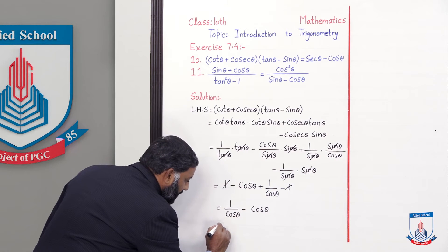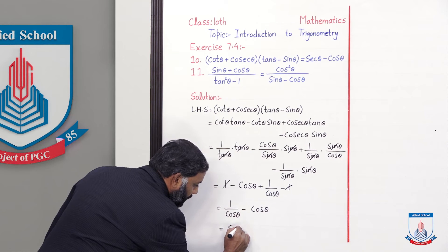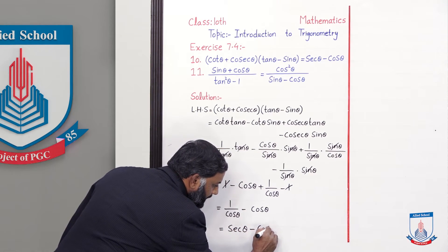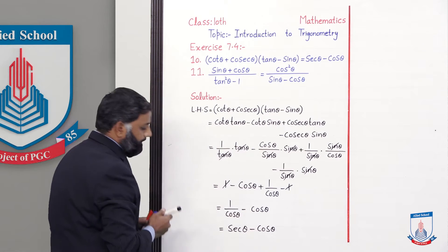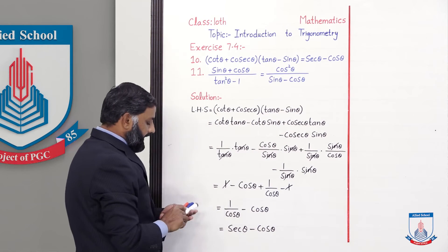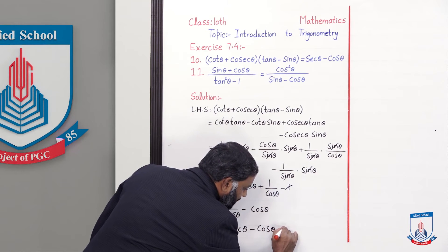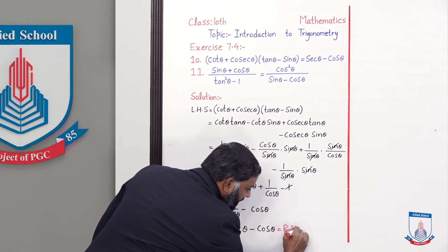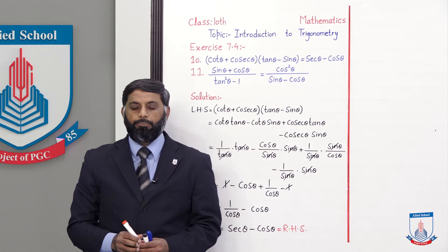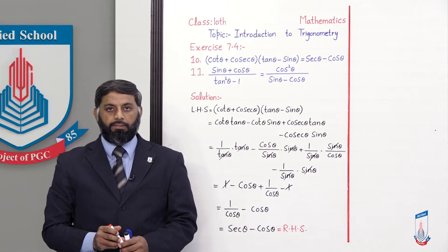Now +1 and −1 cancel, leaving 1/cos θ − cos θ. We write 1/cos θ as sec θ, because the reciprocal of cos is sec, minus cos θ. Students, notice the right hand side is exactly this, so we have verified this identity. We write = RHS. Now let's solve question number 11.